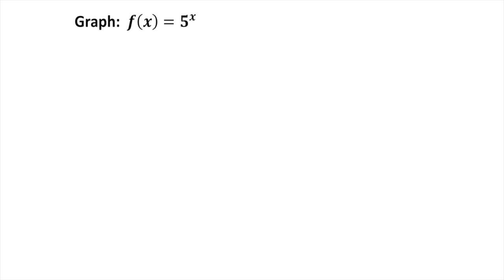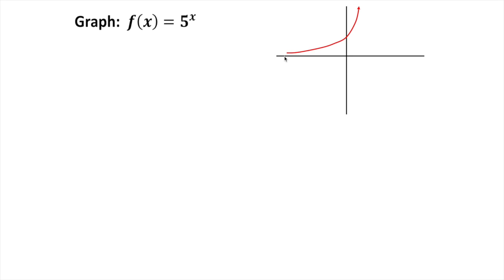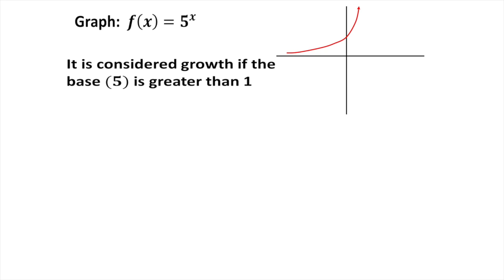We need to talk about the difference between exponential growth and exponential decay. Type y1 = 5^x into your TI-84, or f1(x) on the TI-Nspire. The graph starts close to the x-axis and then grows rapidly — we call that exponential growth. The base here is 5, which is larger than 1, so it is a growth function.